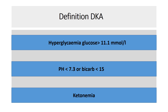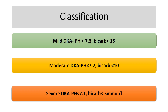Diabetic ketoacidosis is an acute complication of diabetes characterized by a glucose level greater than 11.1, associated with a metabolic acidosis — bicarbonate less than 11, serum pH less than 7.3 — and high levels of ketones in the blood. DKA can be classified into mild, moderate, and severe. Patients with severe DKA have a pH less than 7.1, while those with mild DKA have a pH between 7.2 and 7.3, and a serum bicarbonate between 10 and 15.